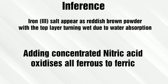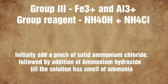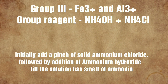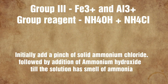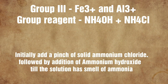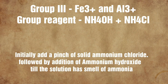The iron 3 salt appears as a reddish brown powder, and adding concentrated nitric acid to it gets oxidized to ferric form. Now we add the group reagent. Iron 3+ and aluminium ions belong to group 3, and the group reagent is ammonium hydroxide in solid ammonium chloride.